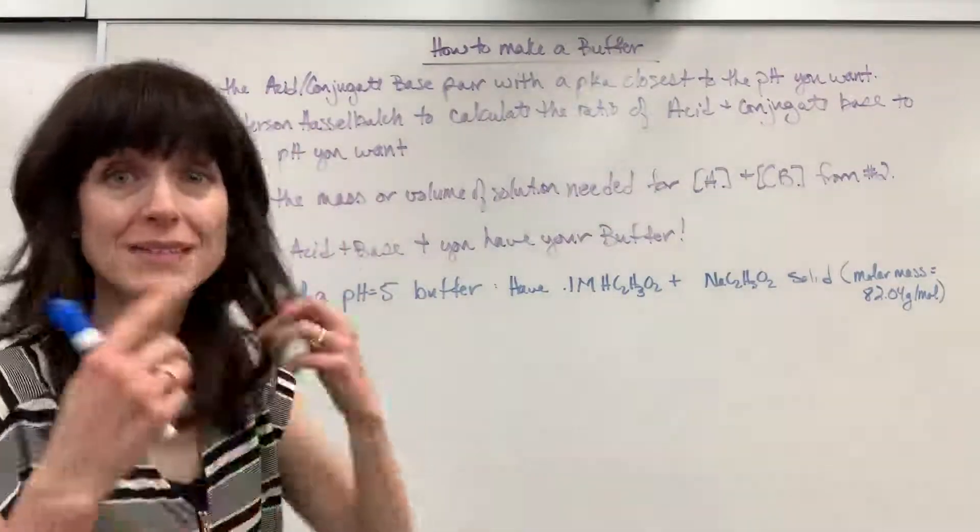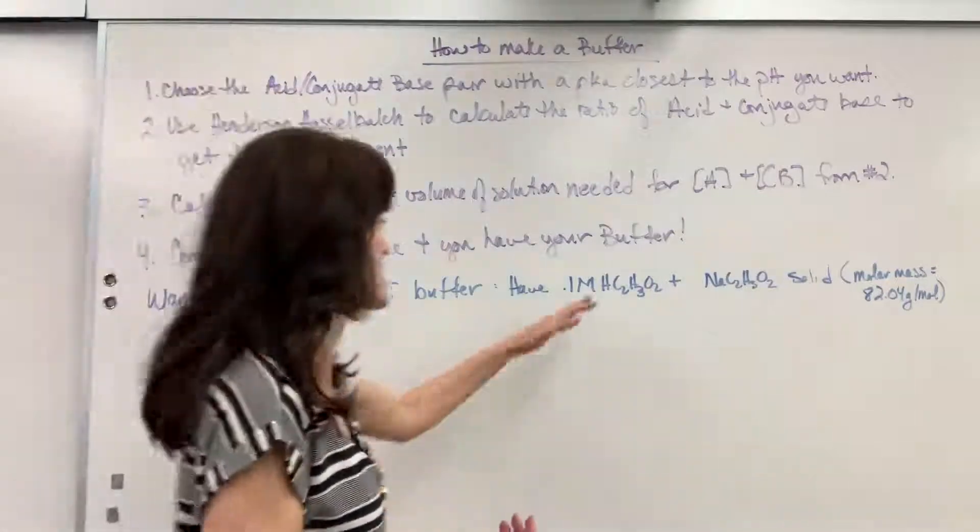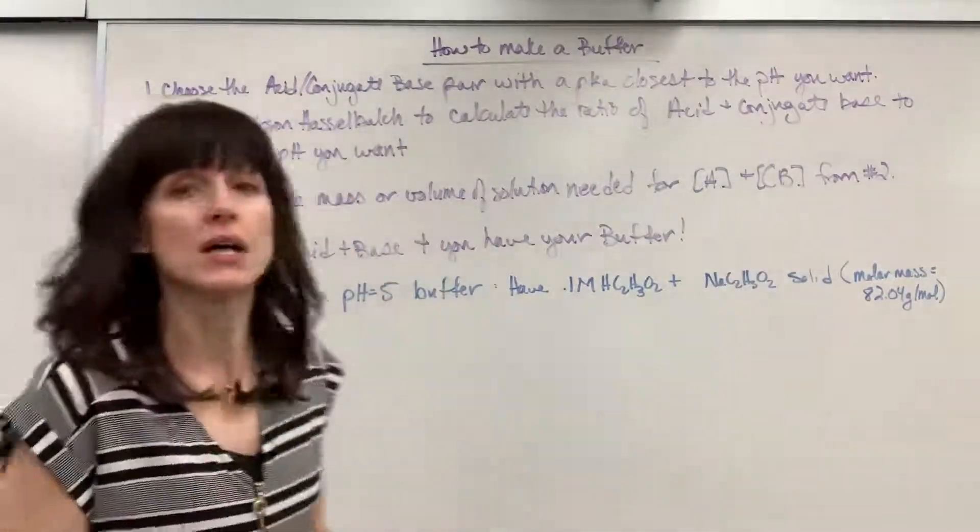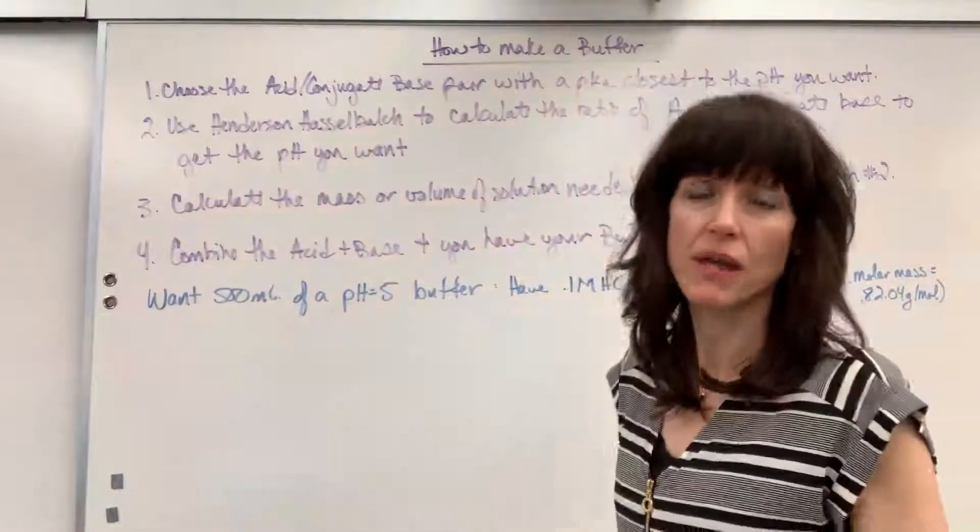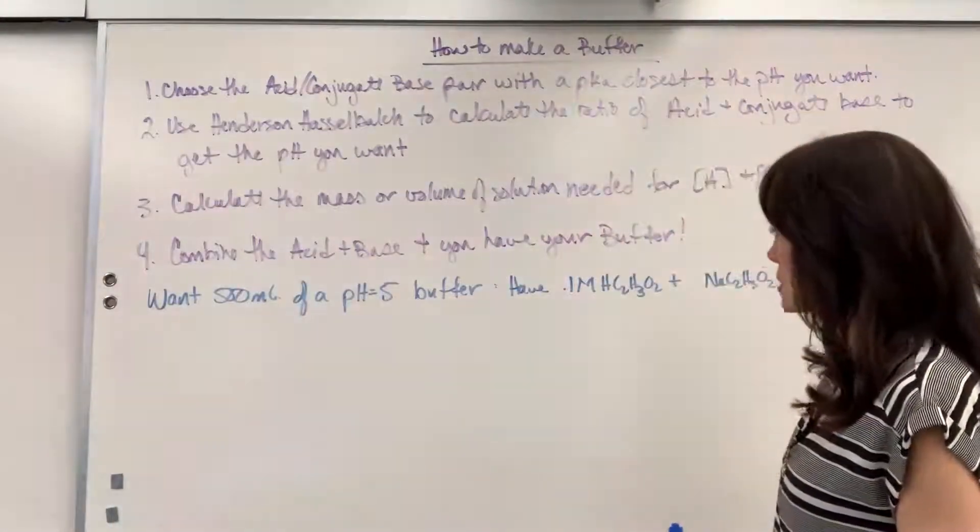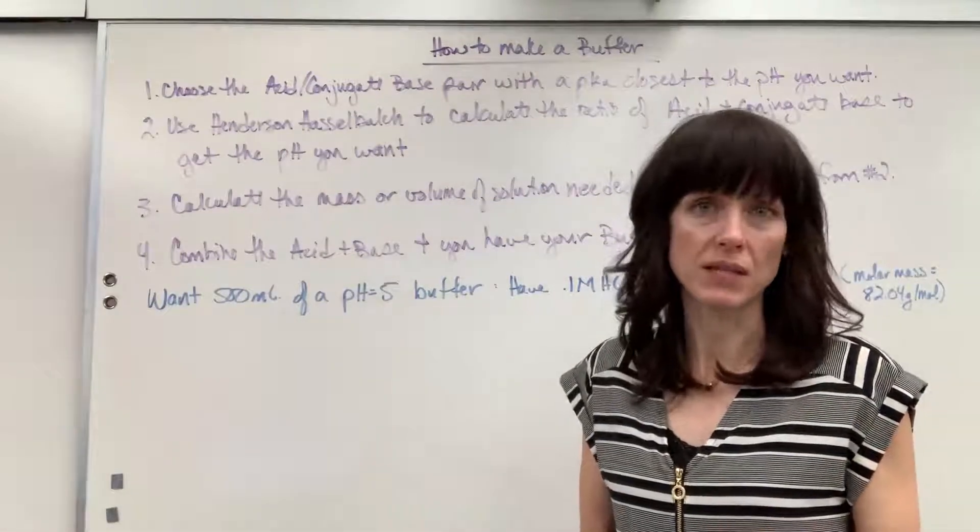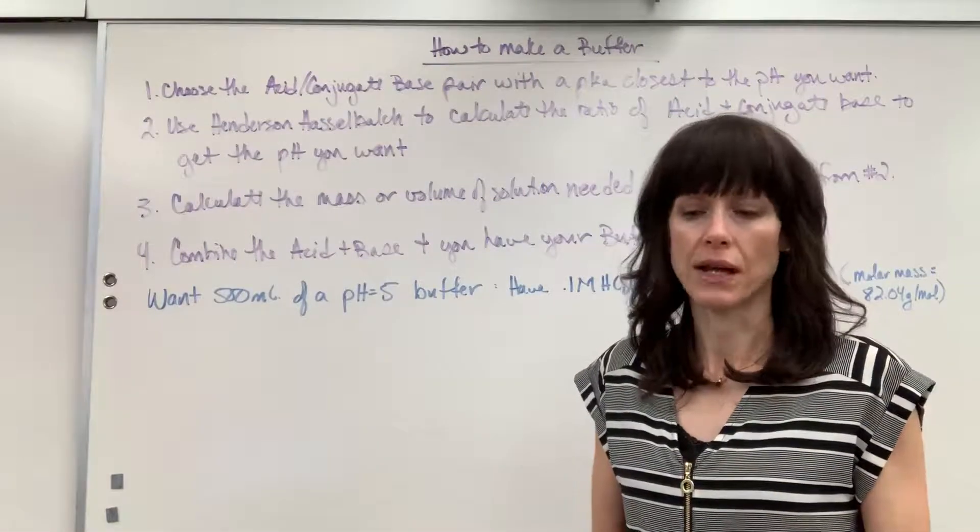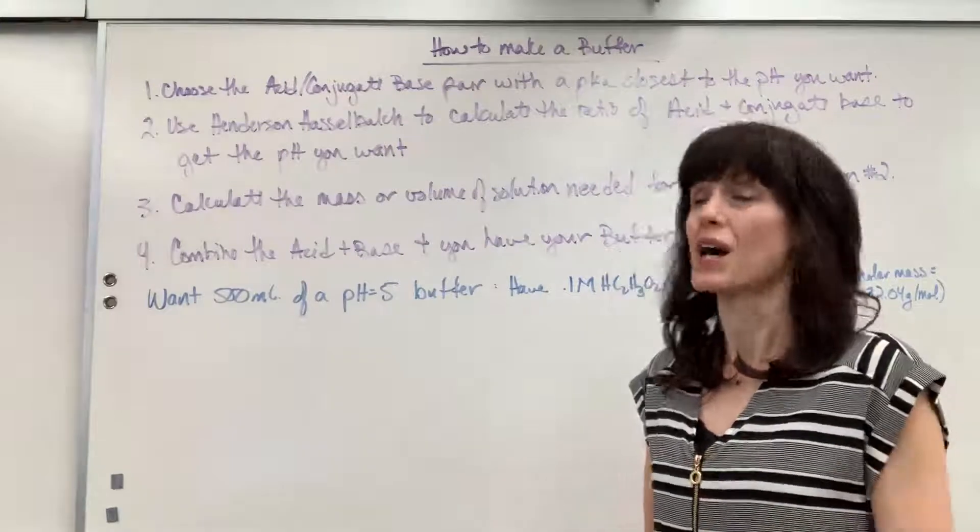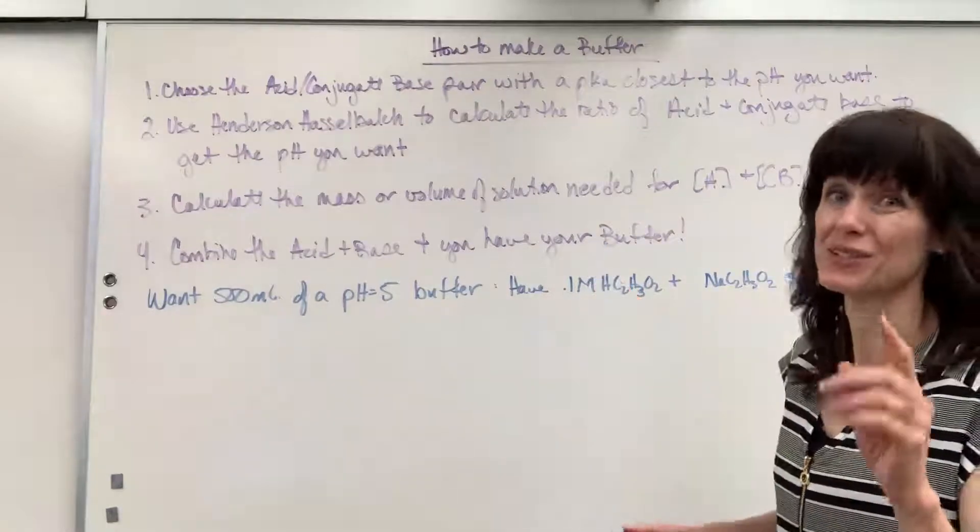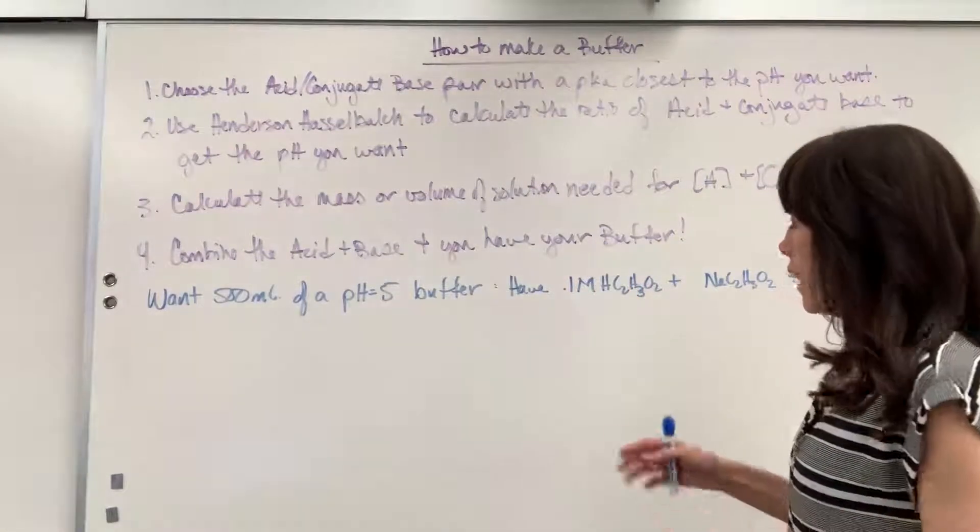So notice, step one, done. I chose the acid-based pair that's pKa is really close to the pH. Now, if you're not sure how to do that, I want you to go to my acid-base equilibrium playlist, and I want you to watch the how to choose a buffer. This is how to make a buffer. That's how to choose the buffer.